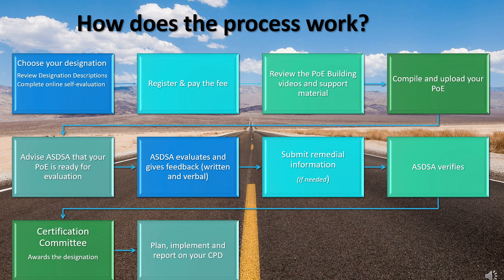Once you've identified which seems to be the most appropriate designation for your working experience, you can then complete the online self-evaluation instrument on the ASDSA website to check that you're on the right track. The next step is to register for that designation on the ASDSA website and pay the fee for the process.